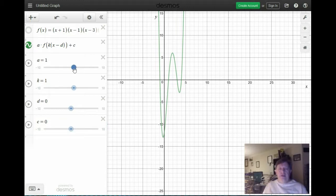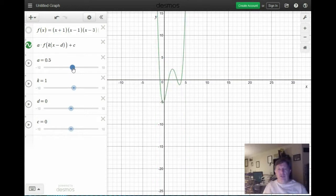As you can see here, a transforms a stretch just as it does in the textbook. I can make a smaller, and the closer to 0 I get, the smaller these peaks and valleys are. And if I make a 0, of course, I get a straight flat line at the x-axis.